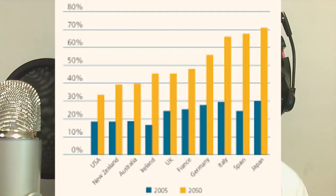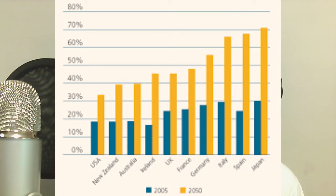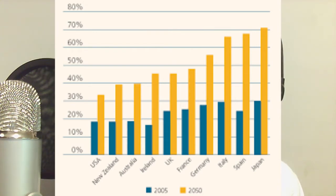Dependency Ratio is also a very important term when it comes to population. The Dependency Ratio is the number of people who are too young or too old to work compared to the number of people in their productive years. This is important because it tells how many people each worker supports. The larger the population of dependents, the greater the financial burden on those who are working.